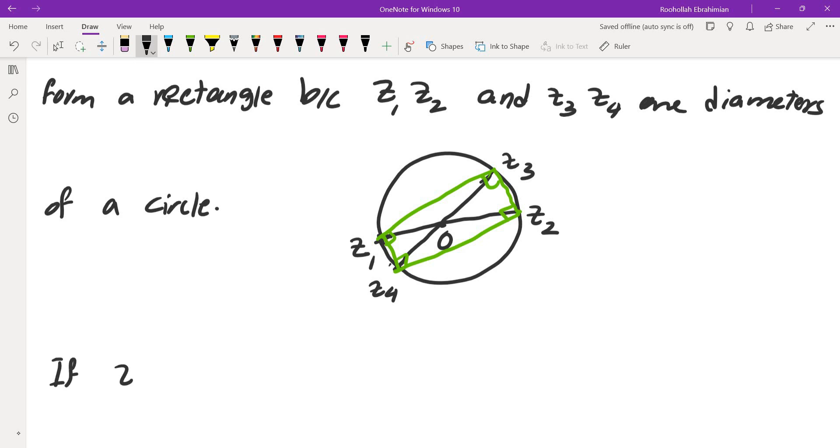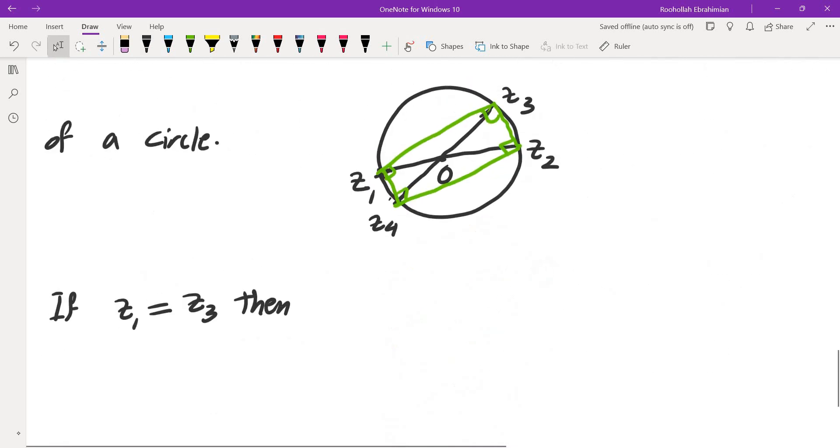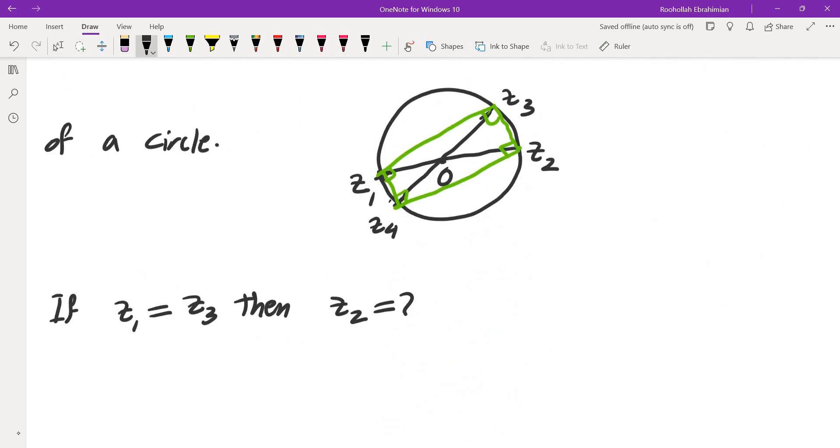If they're the same, if z1 is equal to z3, then you would have z2 equals z4, and that's what we wanted, because we wanted to show either they are vertices of a rectangle or they are two pairs of identical complex numbers.